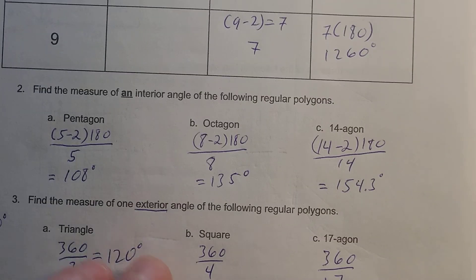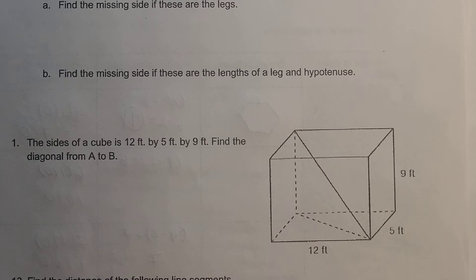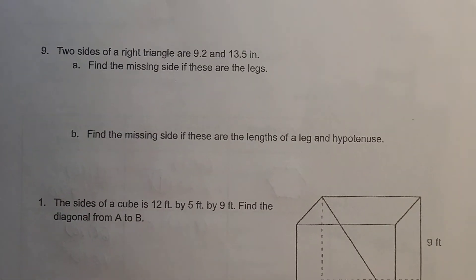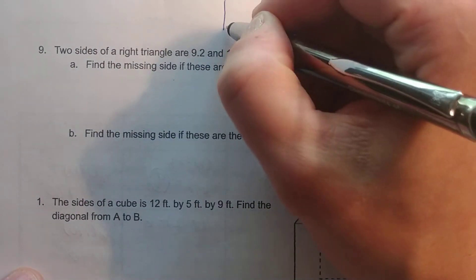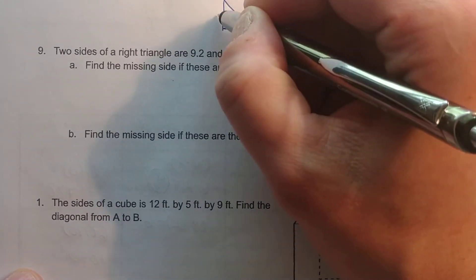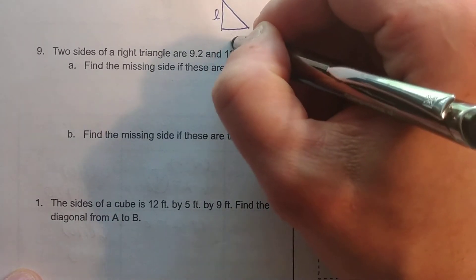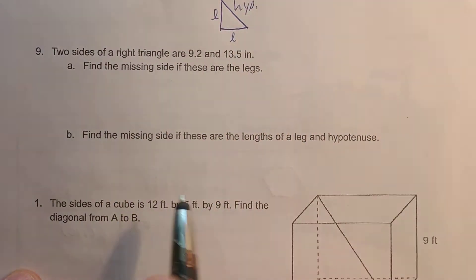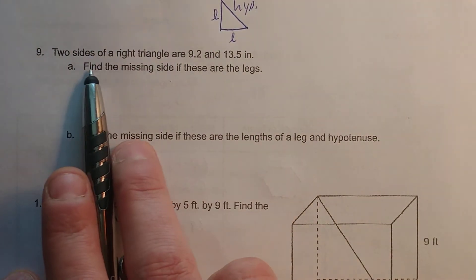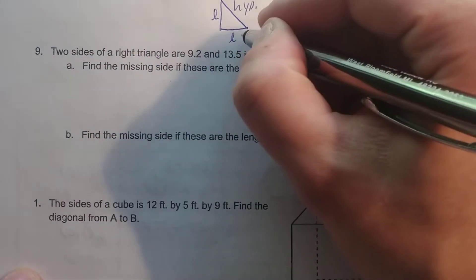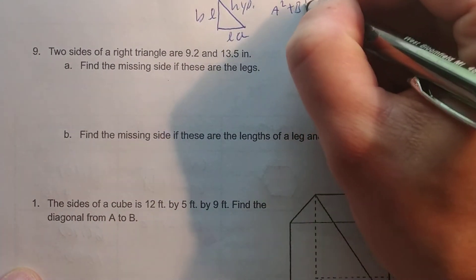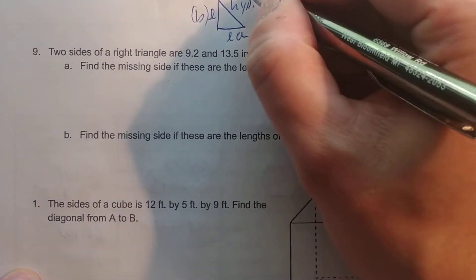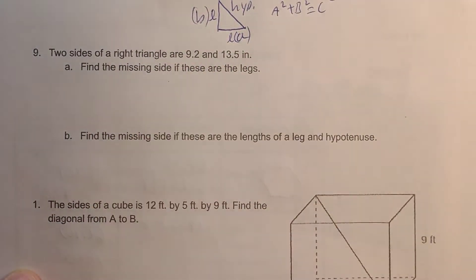If you have any questions, make sure to write them down. Now this time we started to look at the Pythagorean Theorem. Remember, the Pythagorean Theorem only applies to right triangles. These are the legs, and then this is your hypotenuse. If this is A, this is B, and this is C — remember, it's A squared plus B squared equals C squared.